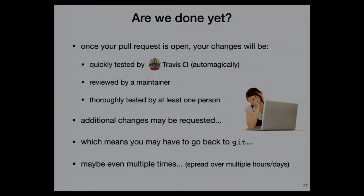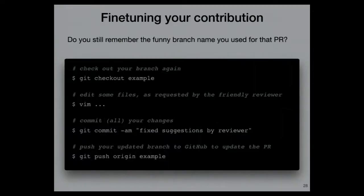After clicking the green button to create the pull request, you're not done — this is just starting the contribution. Travis CI will trigger automatically and do some tests on your easyconfig file: is it sensible, does it have all its dependencies, does it actually parse? Then at some point a maintainer will review your pull request, somebody will test it by doing the actual installation, and report back whether it worked. The reviewer may ask for changes or Travis may fail, requiring you to go back to Git — and this review cycle may happen multiple times.